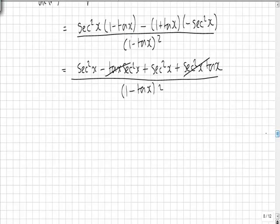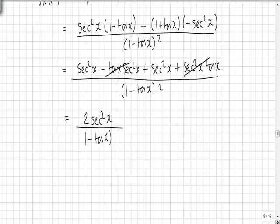leaving us with 2 sec squared x over 1 minus tan x all squared. And as you can see we have a square on the numerator and a square on the denominator.